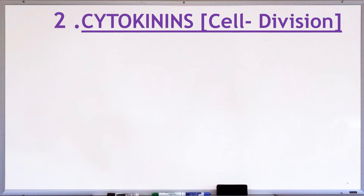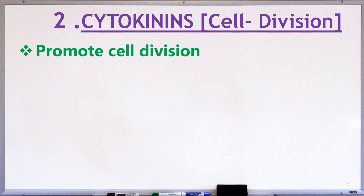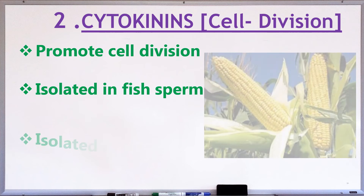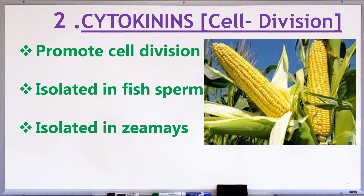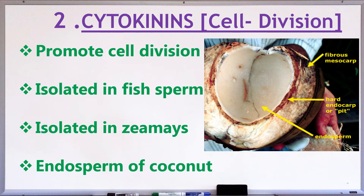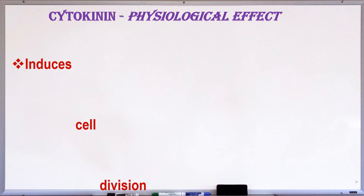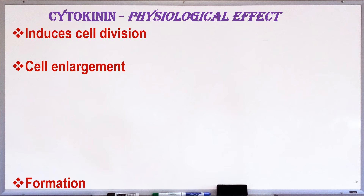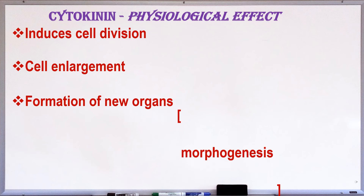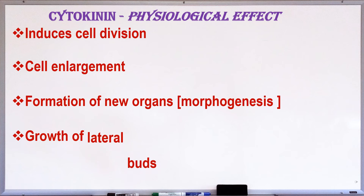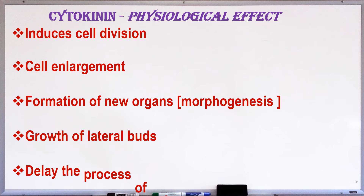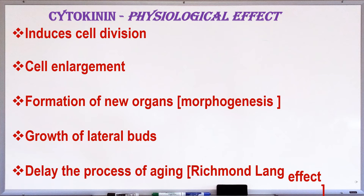The next phytohormone is cytokinin. The word cytokinin means cell division. Cytokinins promote cell divisions. It was first isolated from herring fish sperm. Later on, it was isolated from maize, and the cytokinin isolated from maize is zeatin. It is also found abundantly in the liquid endosperm of coconut. Regarding physiological effects: it induces cell division in the presence of auxin, resulting in cell enlargement, which helps in the formation of new organs from the callus in tissue culture. Cytokinin promotes the growth of lateral buds. The application of cytokinin delays the process of aging in plants, which is termed the Richmond-Lang effect.